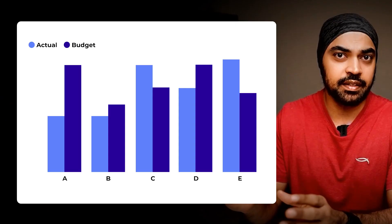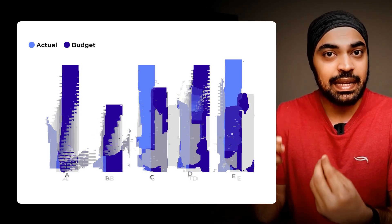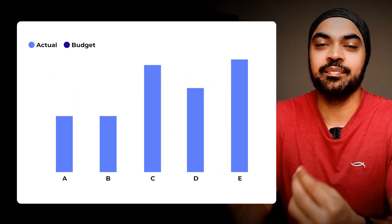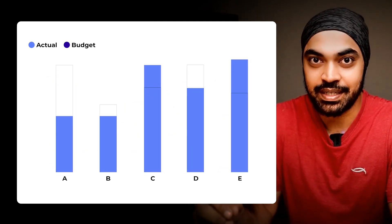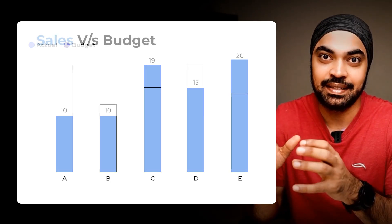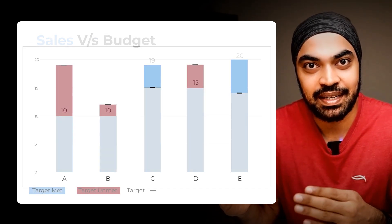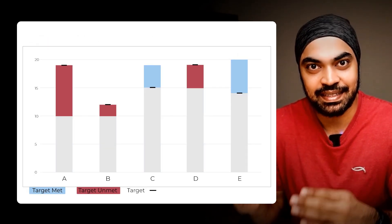When you take a look at a lot of budget versus actuals charts in Power BI, they're going to look something like this — pretty standard stuff. But we can ease off the cognitive load from this chart and add a bit of flair to it and make it look like this, or even better, make it look like this. Let's take a look at how we build these two kinds of budget versus actuals visualizations in Power BI.